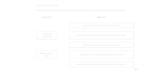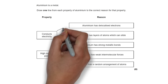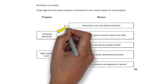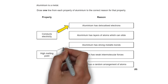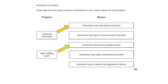Draw one line from each property of aluminium to the correct reason. Aluminium conducts electricity because of its delocalised electrons. It has a high melting point because it has strong metallic bonds.